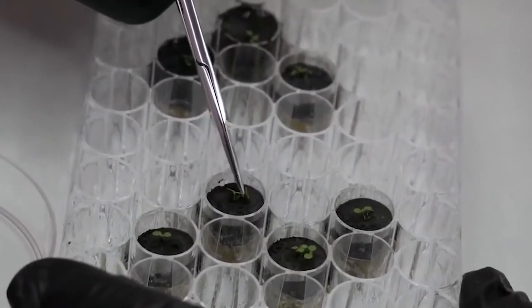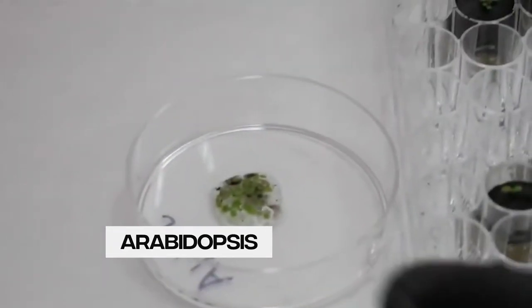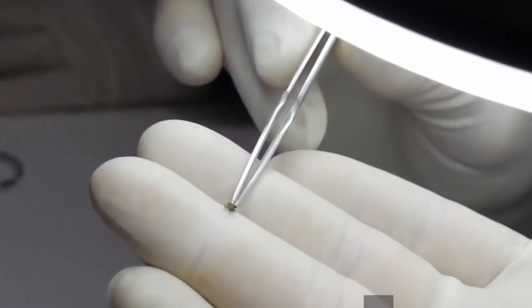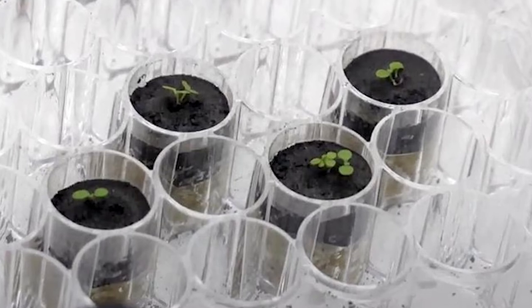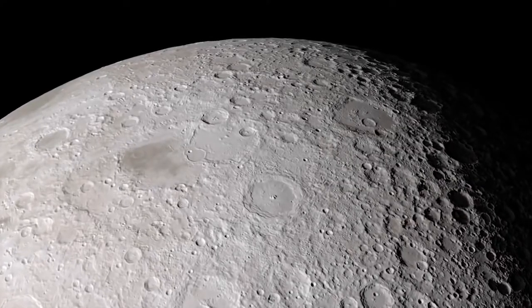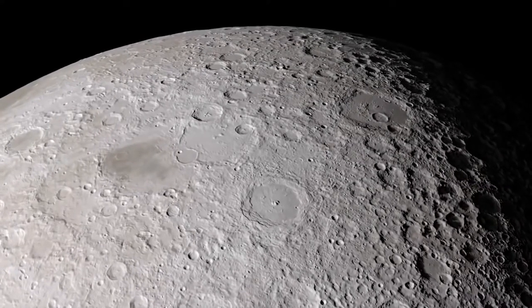In all three samples, the researchers were able to cultivate Arabidopsis, which is nothing but the Thale Cress. The plants fared the worst in the Apollo 11 soil, which was the most mature, meaning it had been exposed to the moon's surface the longest.